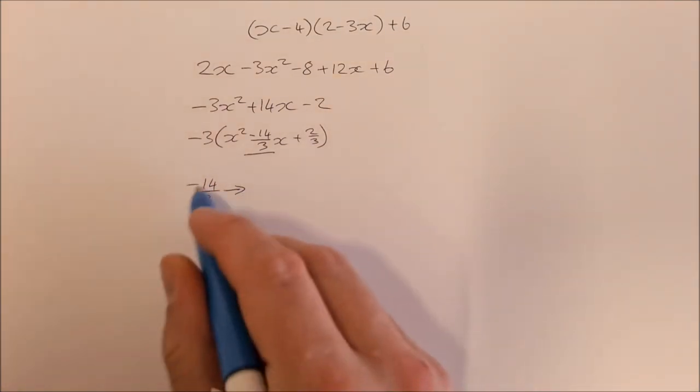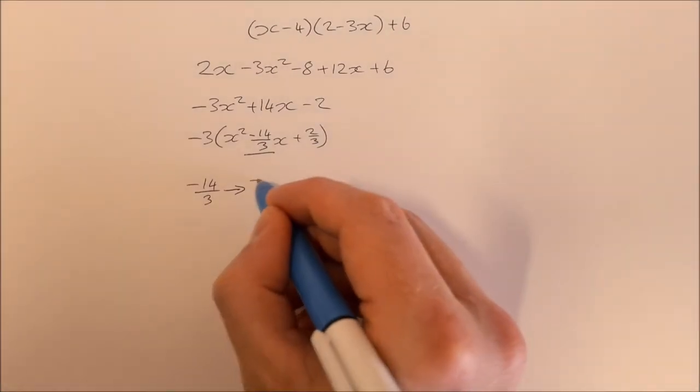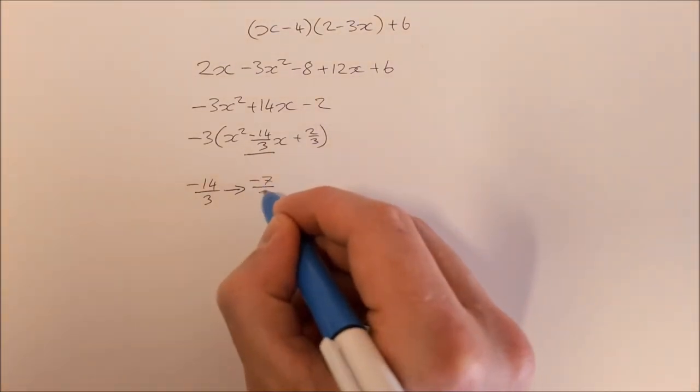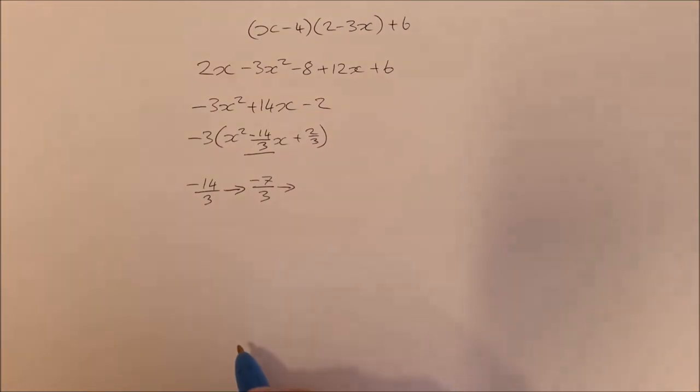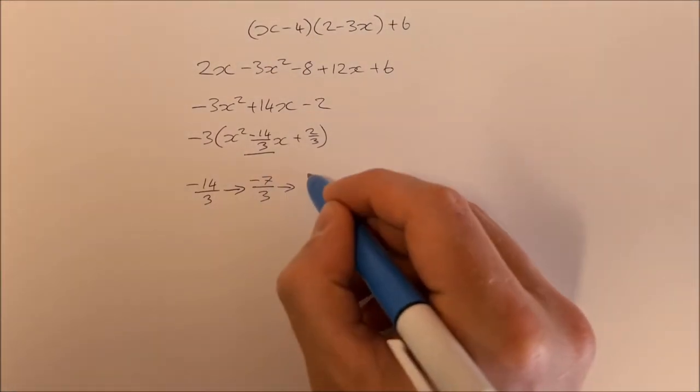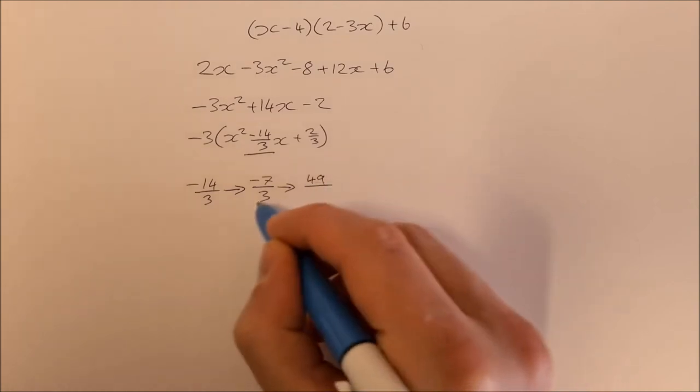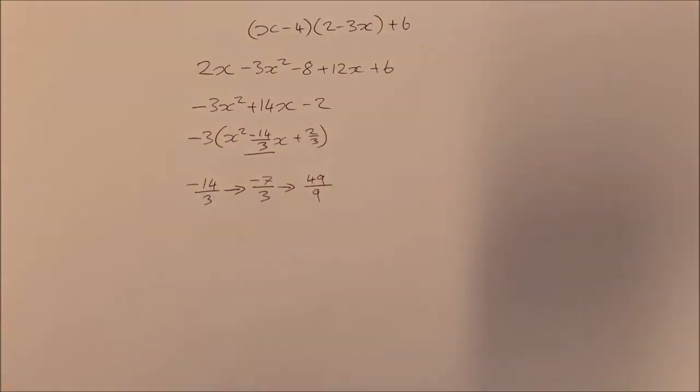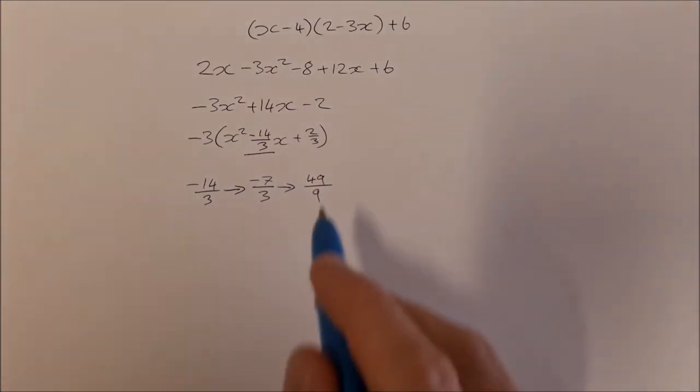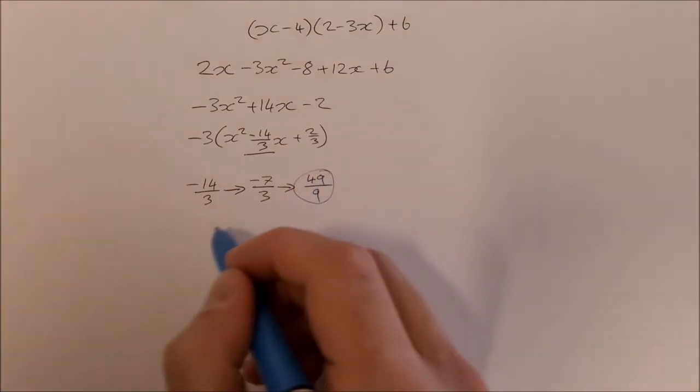We're going to half it. If you half minus 14 over 3, you get minus 7 over 3. And then we're going to square that. So to square it, you square the top and the bottom, so that'll be minus 7 squared is 49, and 3 squared is 9. So we get 49 over 9. That's what we're going to add and subtract then.